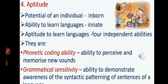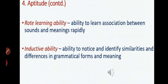First is phonetic coding ability — the ability to perceive and memorize new sounds. सभी बच्चों की अपनी-अपनी memorize करने की क्षमता होती है, और new sounds को कैसे memorize करना है इससे भी language learning पर प्रभाव पड़ता है. Second is grammatical sensitivity — grammatical rules के regarding awareness जो बच्चों में पैदा करनी है, उसका भी language learning में प्रभाव पड़ता है.